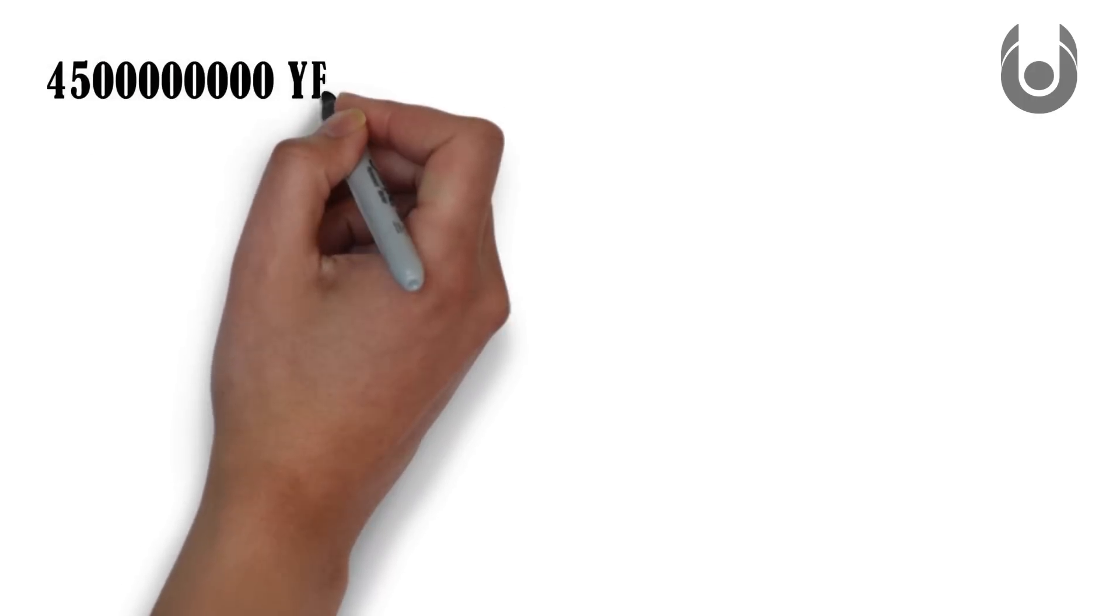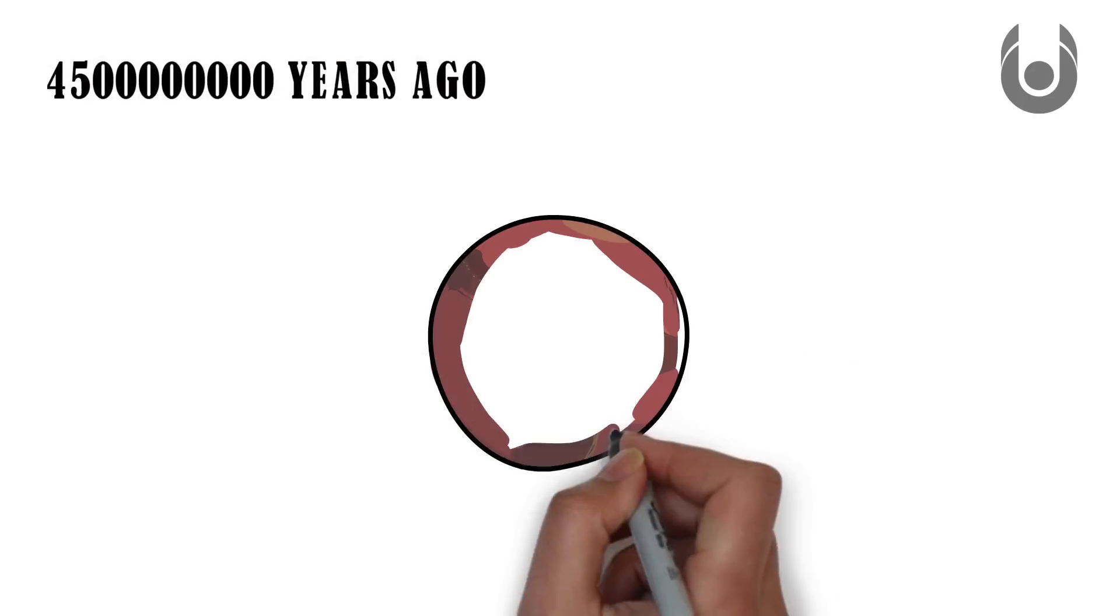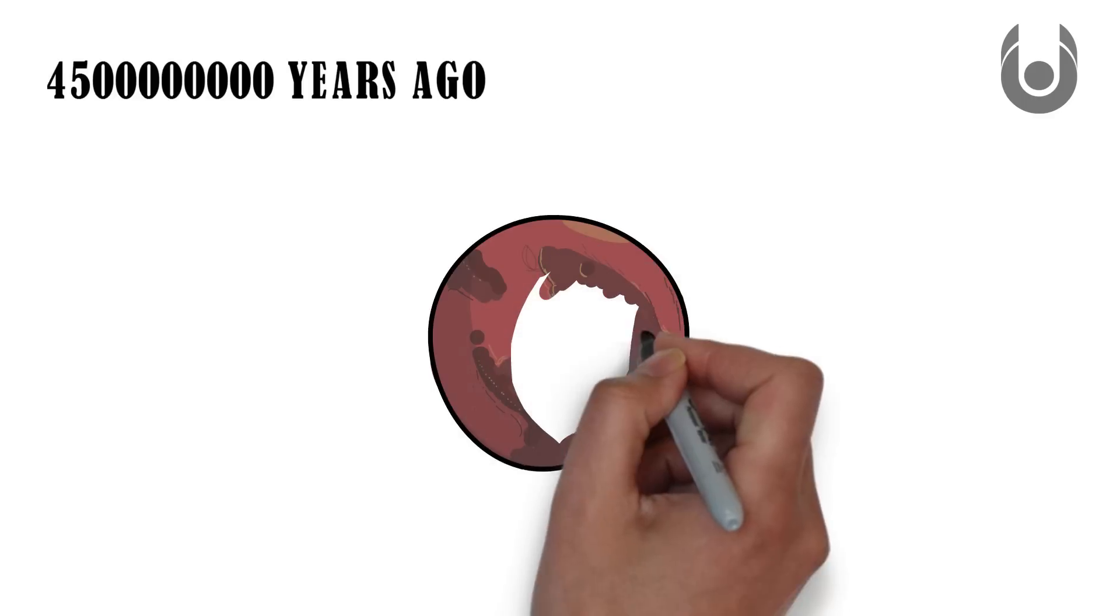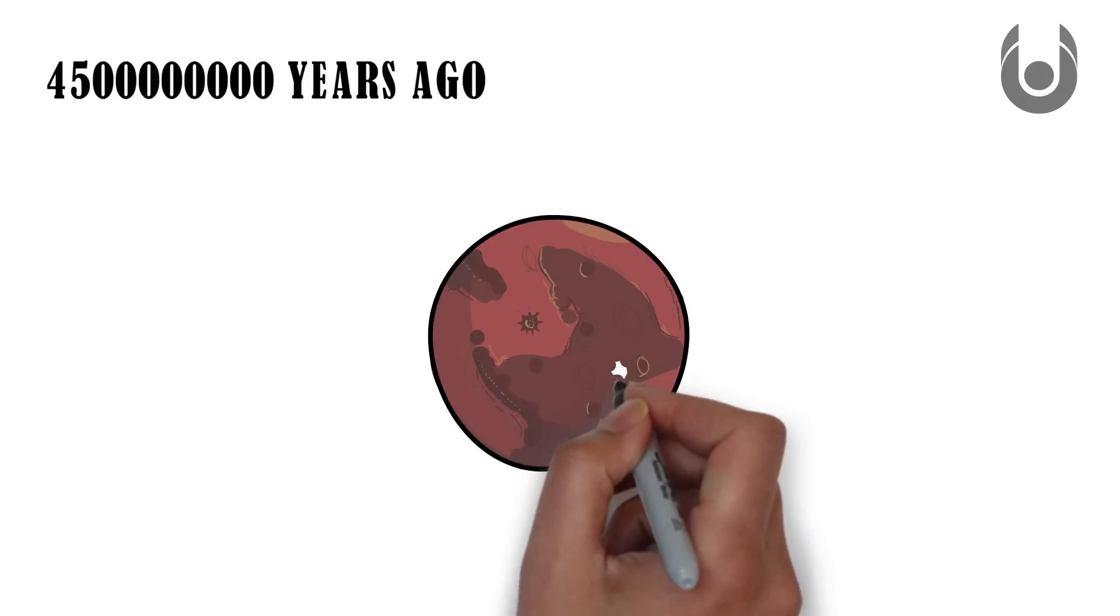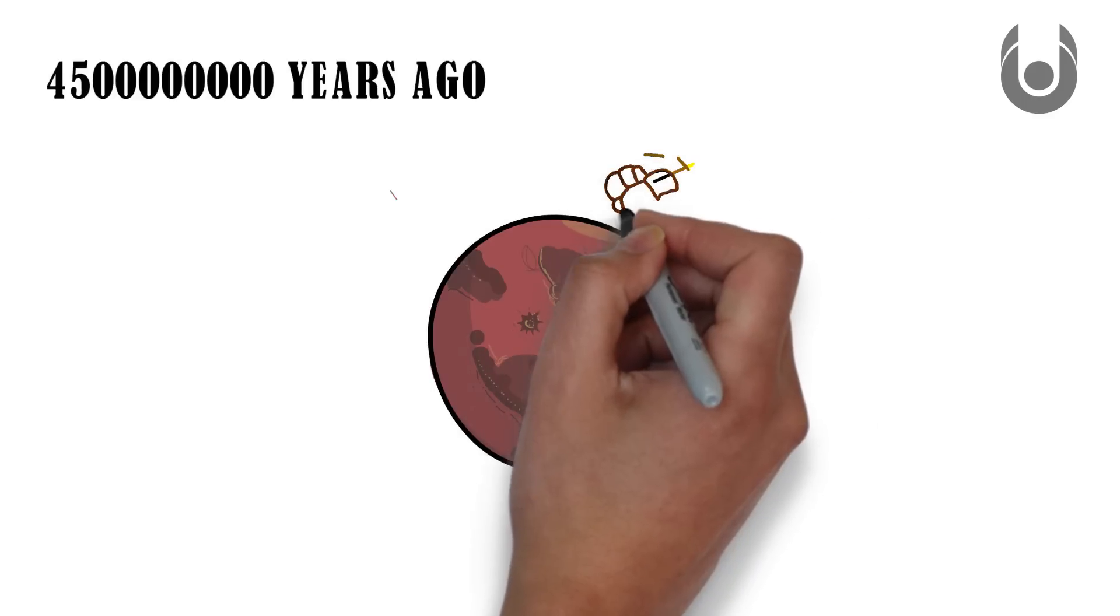Once upon a time, more than 4.5 billion years ago, there was an unnamed planet circling an unnamed star. Its surface was molten lava, and it had no life upon it.